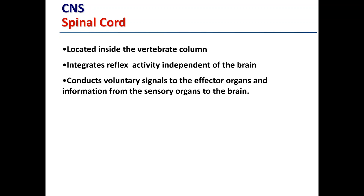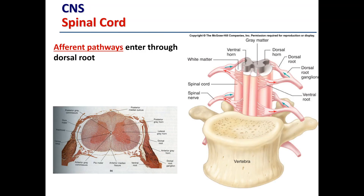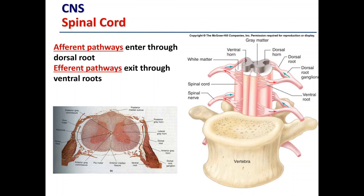The spinal cord sends voluntary signals to the effector organs — in this module, skeletal muscle — and also relays information from the sensory organs back to the brain. Afferent pathways, carrying information back to the brain, enter through the dorsal root. Efferent pathways exit through the ventral root, going down to the muscle. So sensory information travels back in one direction and efferent information out to skeletal muscle travels in the other.